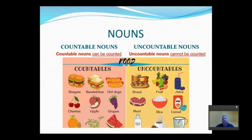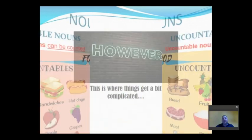Let's take food for example. On your left, there are countable nouns. We can count them: one burger, two burgers, three burgers, four sandwiches, five hot dogs, six apples. On the other hand, on your right we have several uncountables. For instance, fruit. Can you say 'give me three fruits'? Or one juice, two juice, or one rice, two rice, three rice?